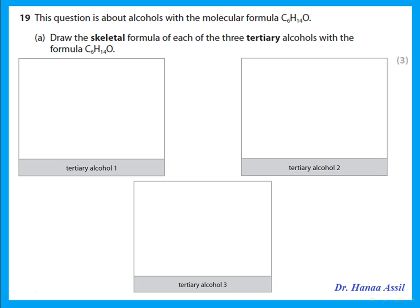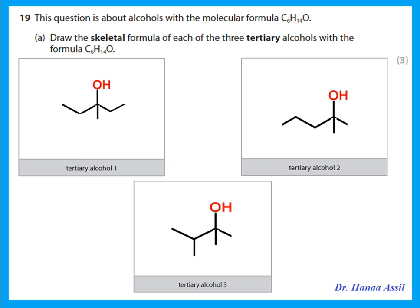This question is about alcohols with molecular formula C₆H₁₄O. Draw the skeletal formula of each of the three tertiary alcohols with this formula — six carbons, tertiary alcohol, skeletal formula. The first possibility places the OH to make a tertiary alcohol with six carbons. The second changes the position of the OH while keeping it tertiary. The third gives another structural arrangement — these are the three skeletal formulas of the three tertiary alcohols.